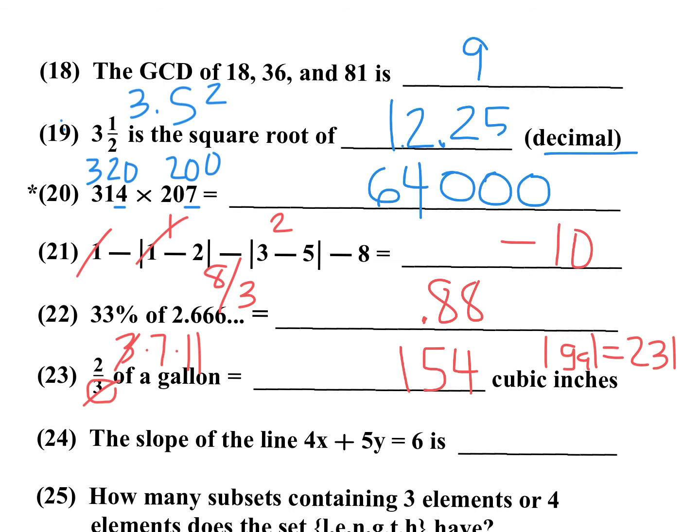The slope of a line in standard form is negative A over B. So negative 4 over 5. So your formula here is going to be negative A over B for a slope in standard form. So negative 4 over 5. And that's going to be number 24. So today you've got 4 bonus problems.